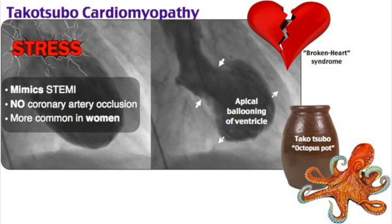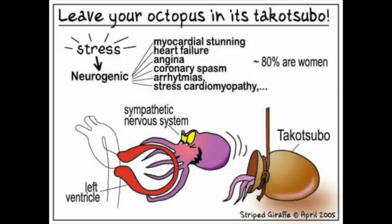For diagnosis, EKG shows ST elevations especially in the anterior leads, similar to an anterior MI; ST depressions may also be seen. Cardiac enzymes are often positive — positive troponins and ST elevations may make you think of a STEMI. However, on coronary angiography, there is an absence of acute plaque rupture or obstructive coronary disease.